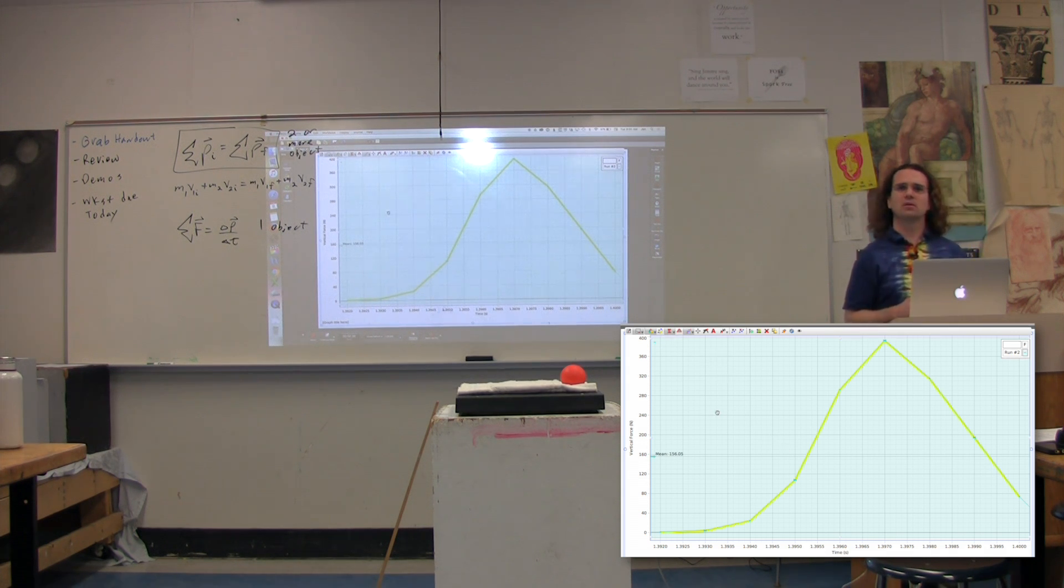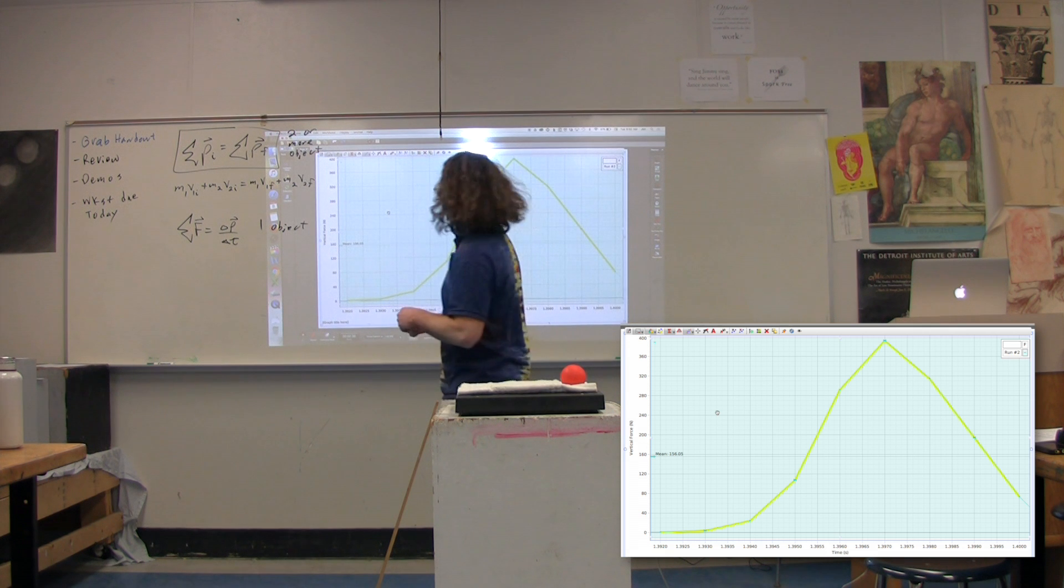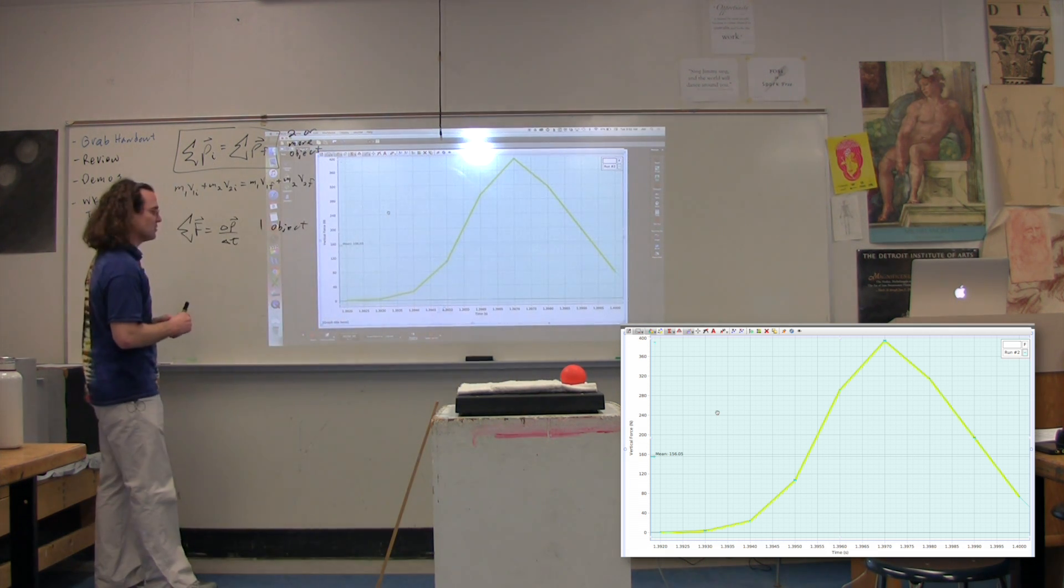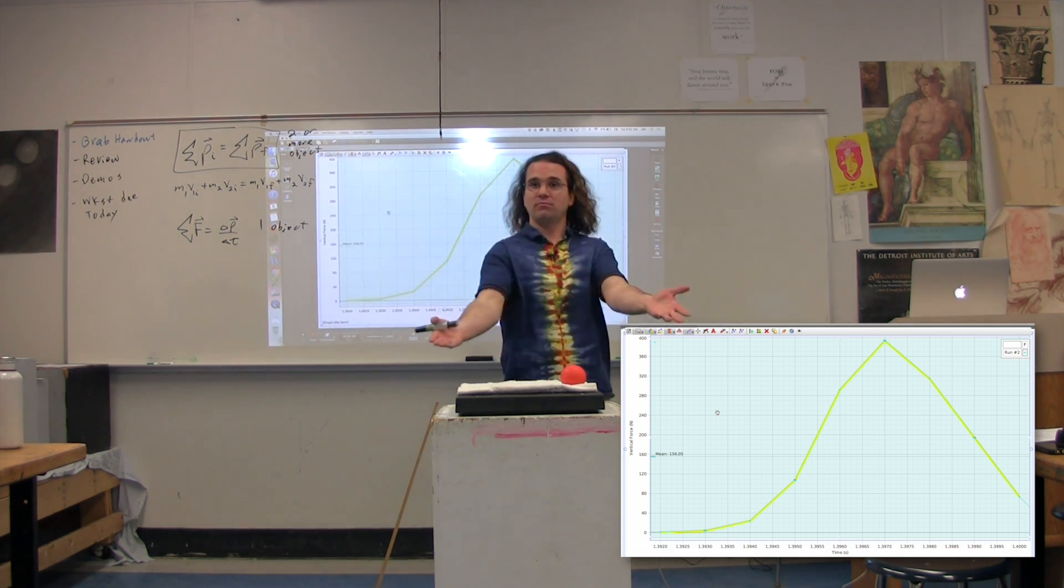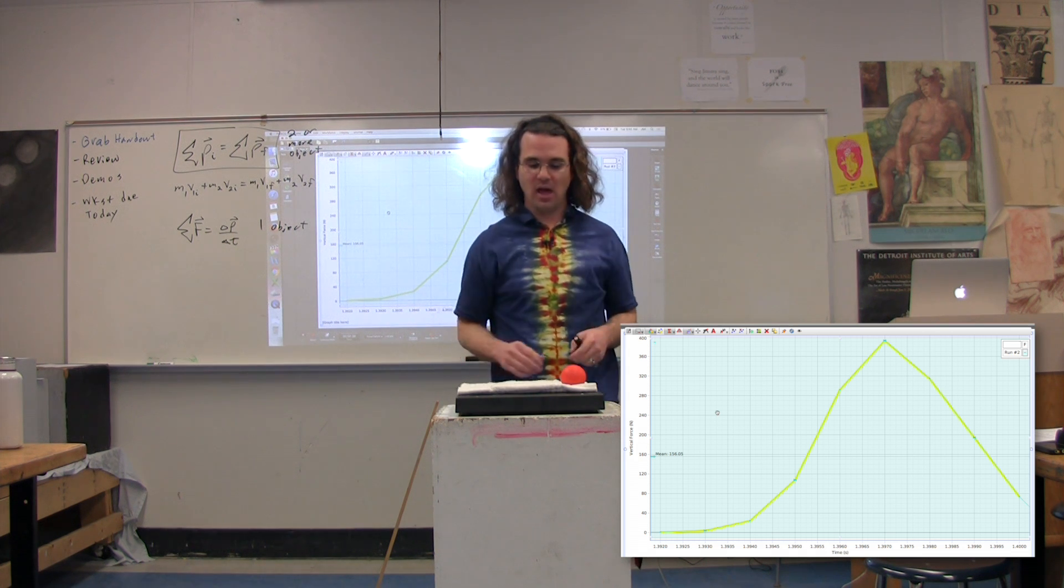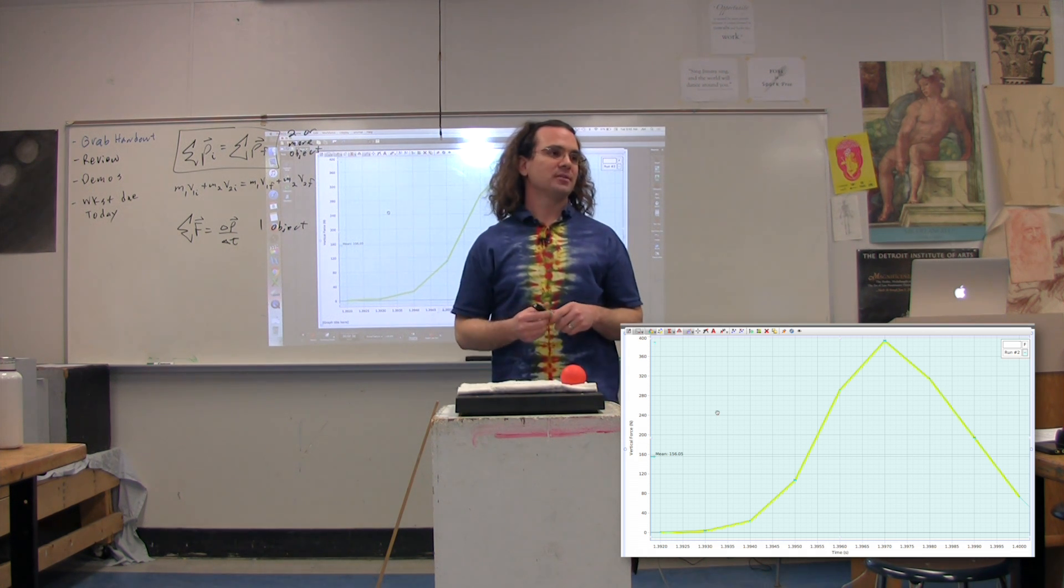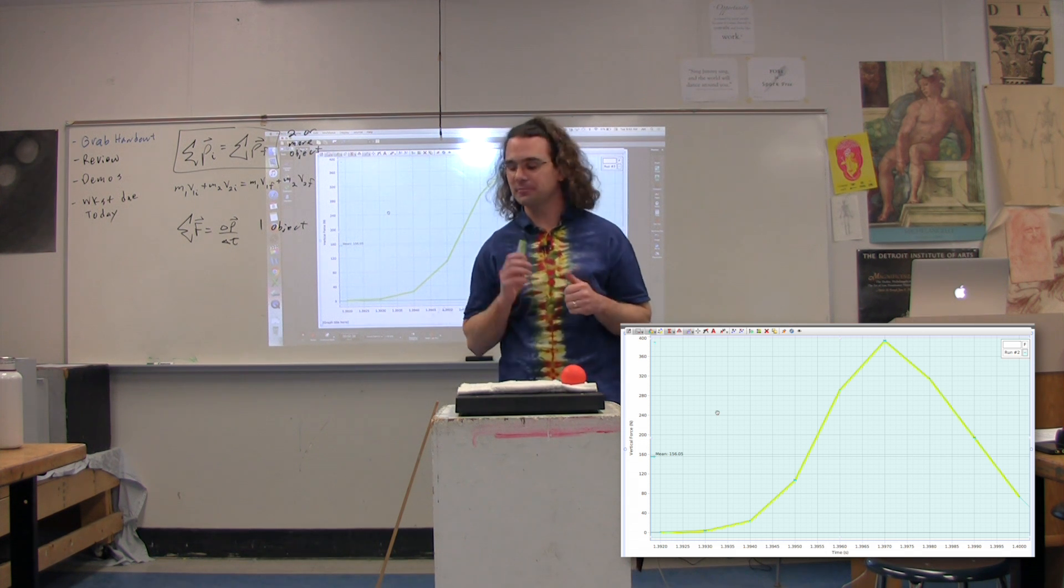And with the helmet, it was 156.5. What was it before? 193. 193. So we decreased it from 193 newtons to 156 newtons as an average force. So you can see physical proof right there that adding a helmet or diaper will decrease the force during the collision. Great.